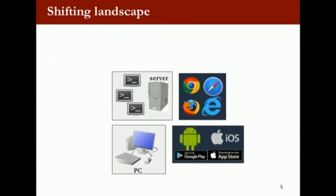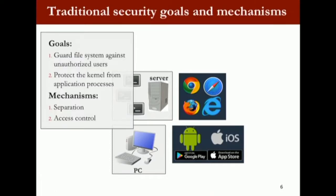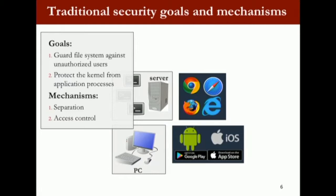I want to motivate information flow. On the left I have images of mostly older systems where you have the server-client paradigm — your own PC. In those days, the security goal was to guard your file system against unauthorized users, maybe protect kernels from application processes. The standard mechanism we developed is separation and access control. These mechanisms are still very relevant today. However, on the right-hand side, these are newer platforms — nowadays we use browsers and phones to access a lot of services. I do my banking mostly through my app, and make appointments through the web.